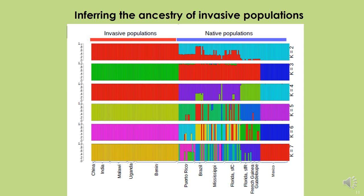We then studied the ancestry of the invasive population using admixture analysis from single nucleotide polymorphisms. K is the number of ancestors. The results indicate that invasive populations have a single common ancestor which is distinct from all other native populations, bringing us to the conclusion that invasive populations are homogeneous and have a common ancestor.